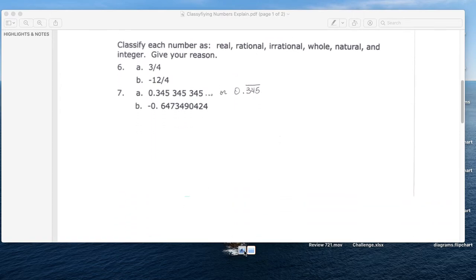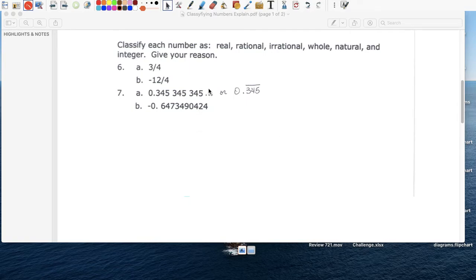Number six, classify each number as rational, whole, natural, and give your reason. Three-fourths is just a rational number. All these numbers are real, so I'm just gonna state that right away, all they're real. Now, this one is rational. It's not a whole number, it's not a natural number, it's not an integer, so three-fourths is just rational.